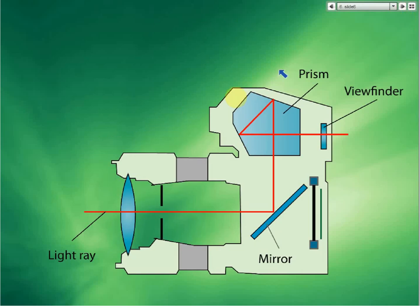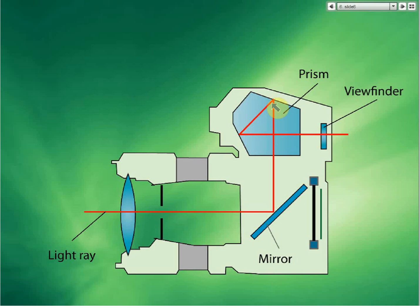This is an illustration of a camera. From here we can see that there is a lens, and when the light goes in there is a diaphragm. The light is reflected and goes into the prism, undergoes total internal reflection, then goes out through the viewfinder.